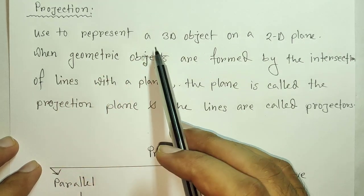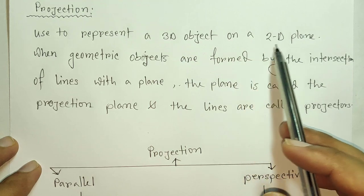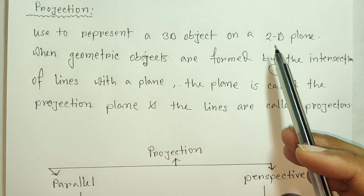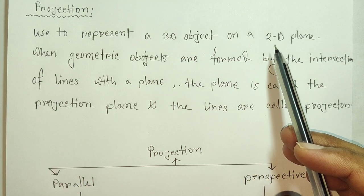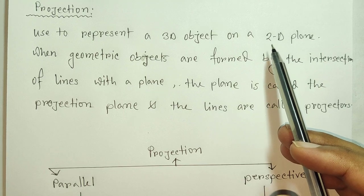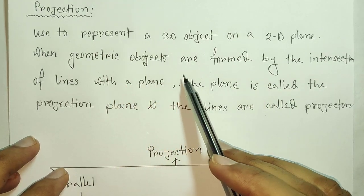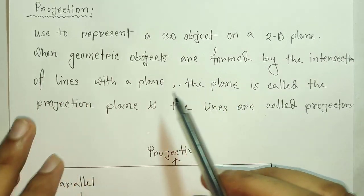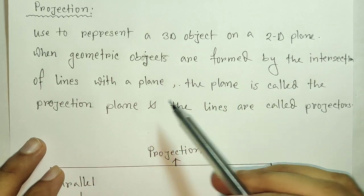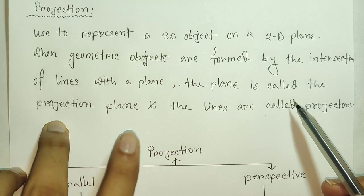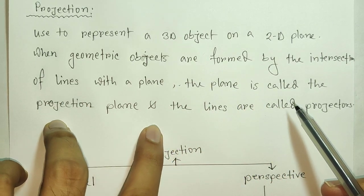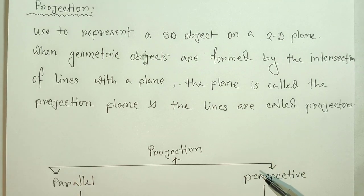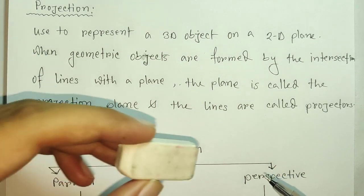We use projection to represent a 3D object on a 2D plane. A 3D object can be represented on a 2D plane. When a projection is formed by the intersection of lines with a plane, the plane is called the projection plane and the lines are called projectors.